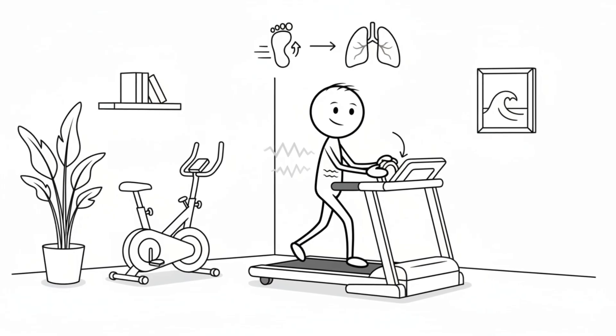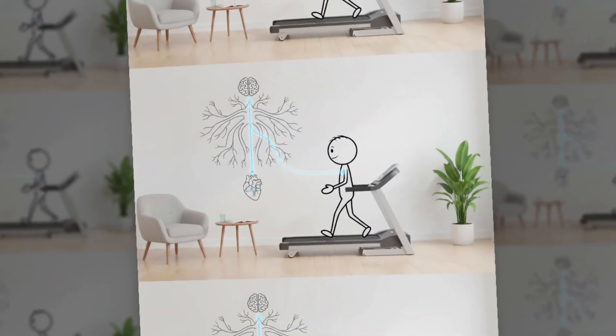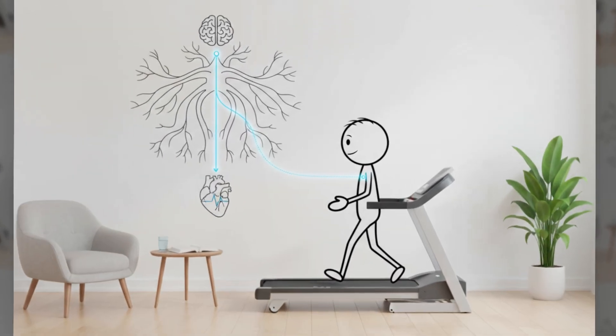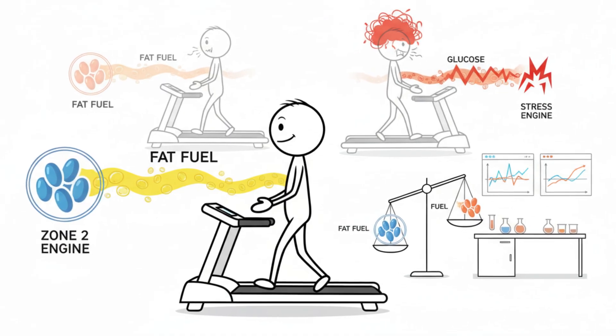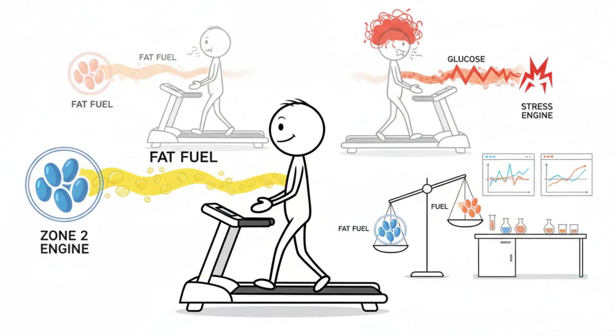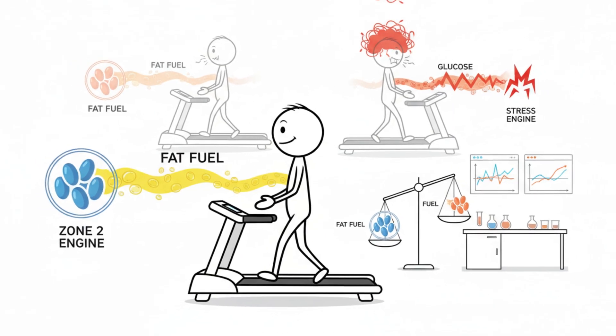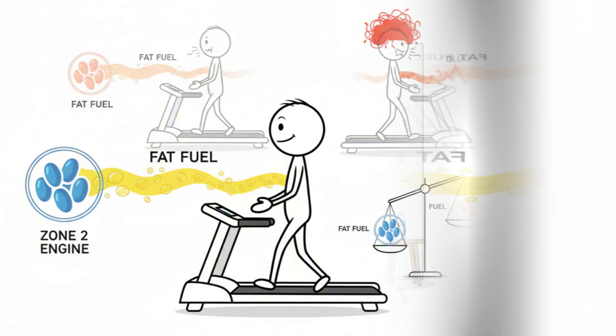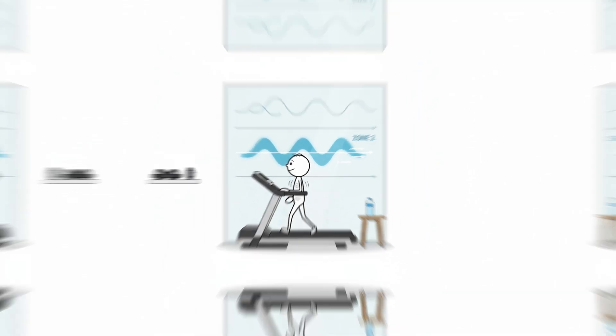Continuous breathing also supports vagal tone, the part of your nervous system that keeps your heart rate calm and stable. Better vagal tone means smoother transitions in and out of effort, which helps maintain fat-focused metabolism rather than triggering stress-driven glucose burning. Many people underestimate how powerful breathing can be in exercise, but for Zone 2, it's one of the cleanest ways to guide your body without equipment. You'll see this technique appear again in the indoor routines coming up.